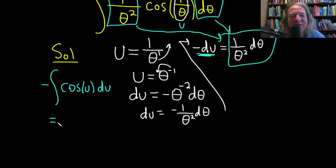So this is negative sine of u plus our constant of integration, capital C. Really, really nice.